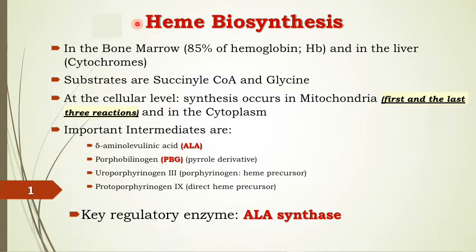Heme of hemoglobin is synthesized in the bone marrow. 85% of heme in our body belongs to hemoglobin. Some other hemoproteins are synthesized in the liver — some of them are cytochromes and other enzymes, which we enumerated in the first lecture.